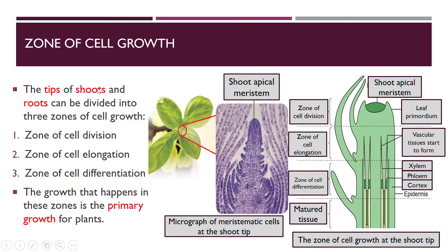The tips and the shoots can be divided into three zones. Whether it's the shoot (pucuk) at the top or the roots at the bottom, both have: zone of cell division, zone of cell elongation, and zone of cell differentiation. The shoot apical meristem is at the top, and the root apical meristem is at the bottom.